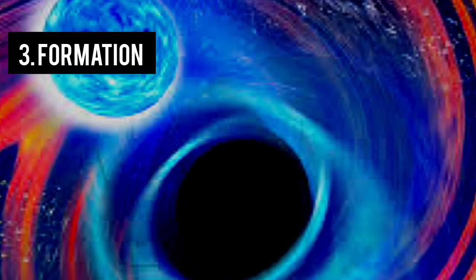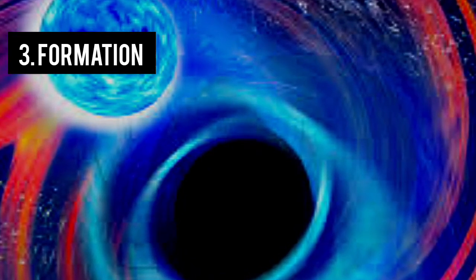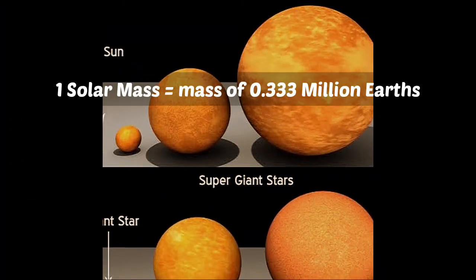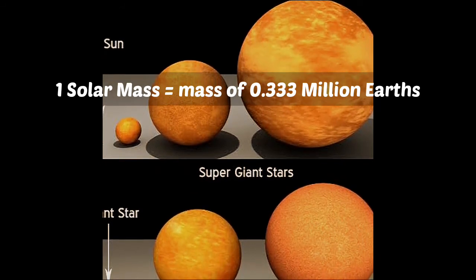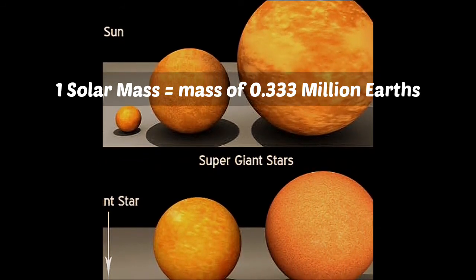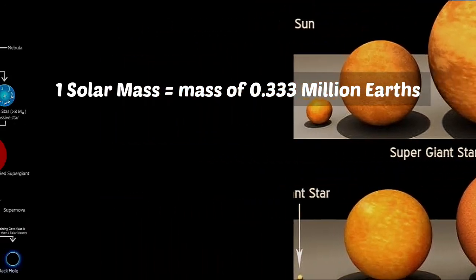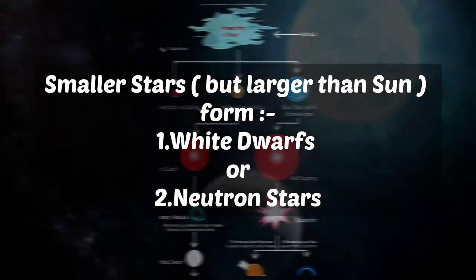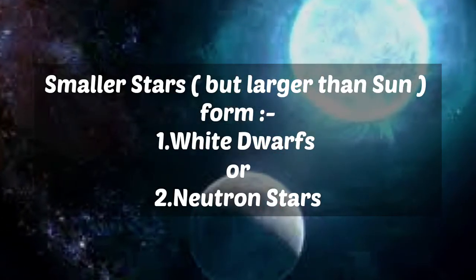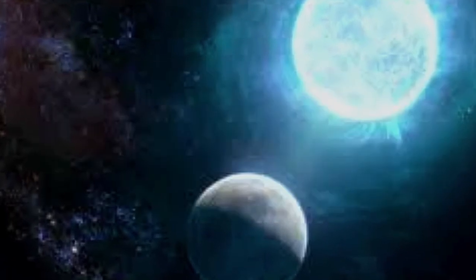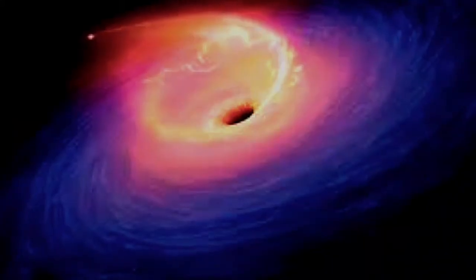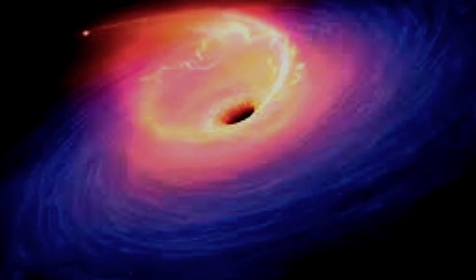How is a black hole formed? A black hole can be formed by the death of a star that is three to four times more massive than the sun. The mass of the sun is known as solar mass, and one solar mass is equal to the mass of 0.333 million Earths. Stars with a smaller amount of mass evolve into less compressed bodies — either white dwarfs or neutron stars. Some black holes have nonstellar origins, meaning large volumes of interstellar gas collect and collapse into supermassive black holes at the center of galaxies.